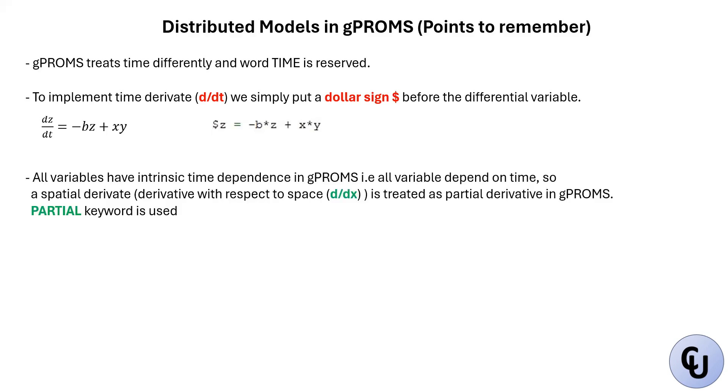All variables have intrinsic time dependence in gPROMS, meaning all variables that you've declared vary with time in gPROMS by default. If you have a variable that depends on other than time, a derivative with respect to other than time, it becomes a partial differential equation. If you have a differential equation where you have derivative of a variable with respect to an independent variable that is not time, for example space, maybe x, then you treat that differential equation as partial differential equation in gPROMS. To write that equation, you need the PARTIAL keyword.